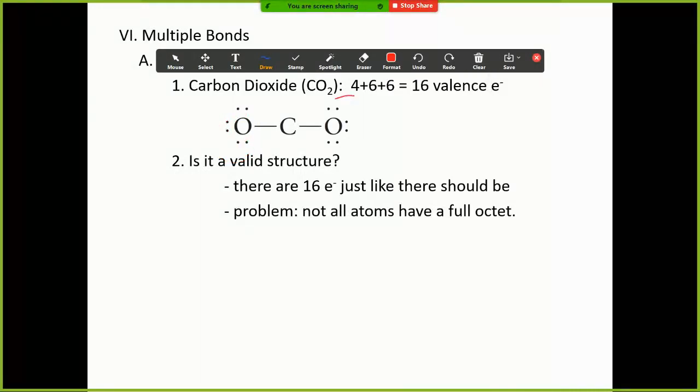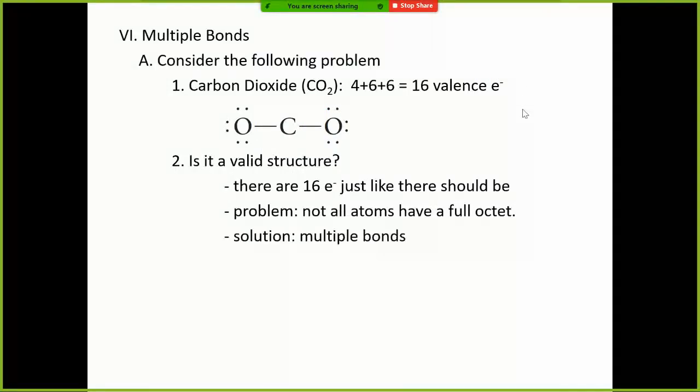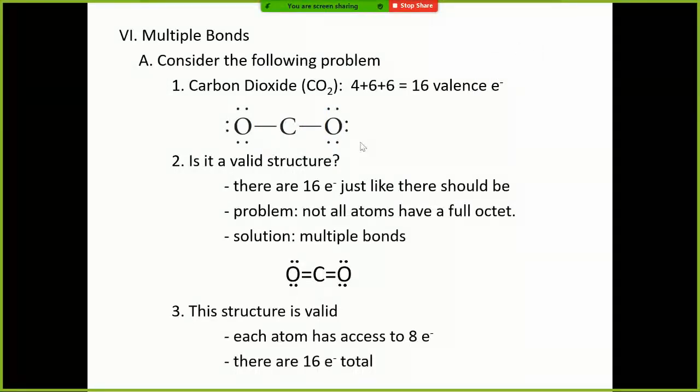This has 8 because 2, 4, 6, and 8, yes, this oxygen is good. But this carbon only has 2, 4 electrons. It's supposed to have 8, not 4. So it doesn't have an octet, meaning it's not a valid structure, and you've got to do the multiple bonds in order to make it work.